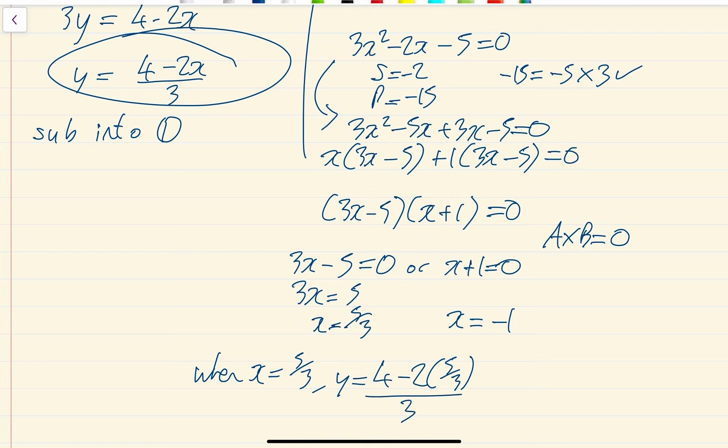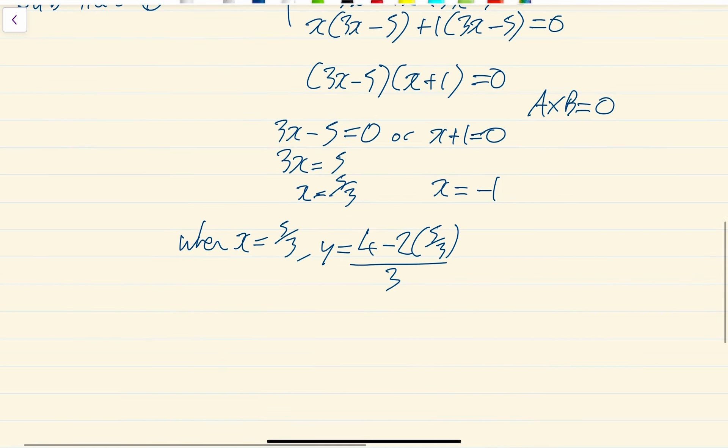I'm just going to go to my calculator now. So 4 minus 2 times 5 over 3, and then divide that by 3. What that will give me is 2 over 9. So one of my coordinates is 5 over 3, which I'll write as 1 and 2 thirds, and then 2 over 9.